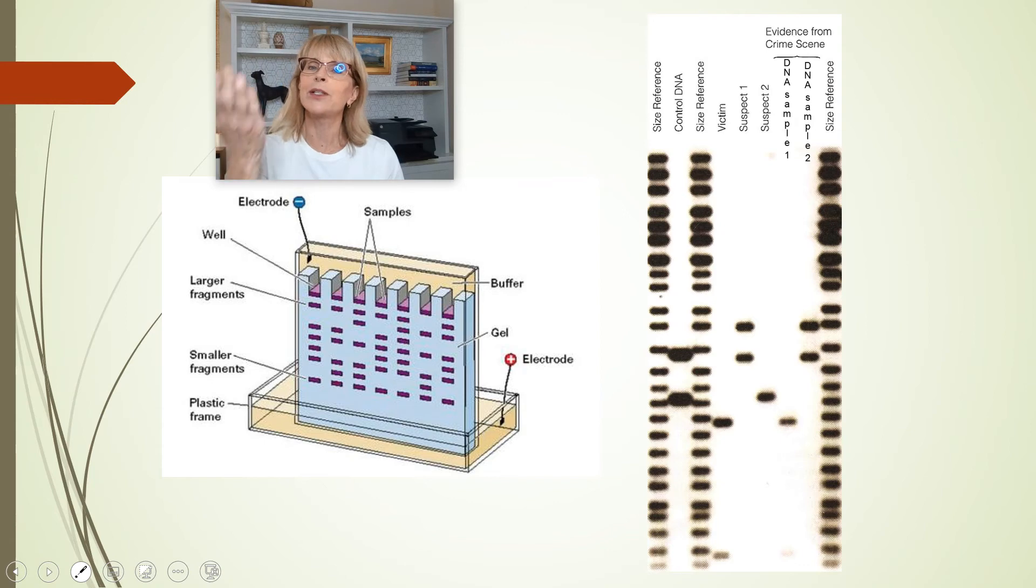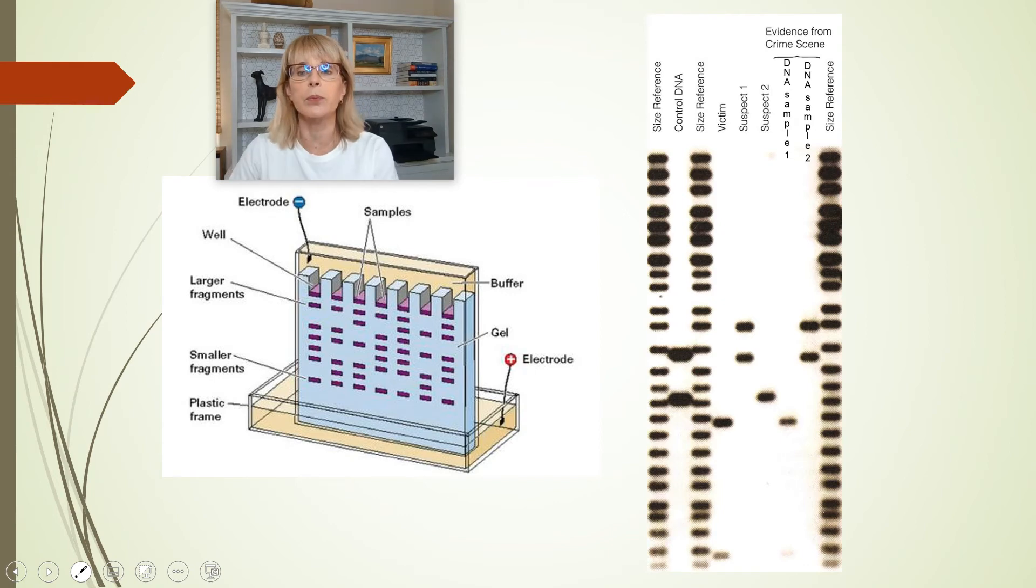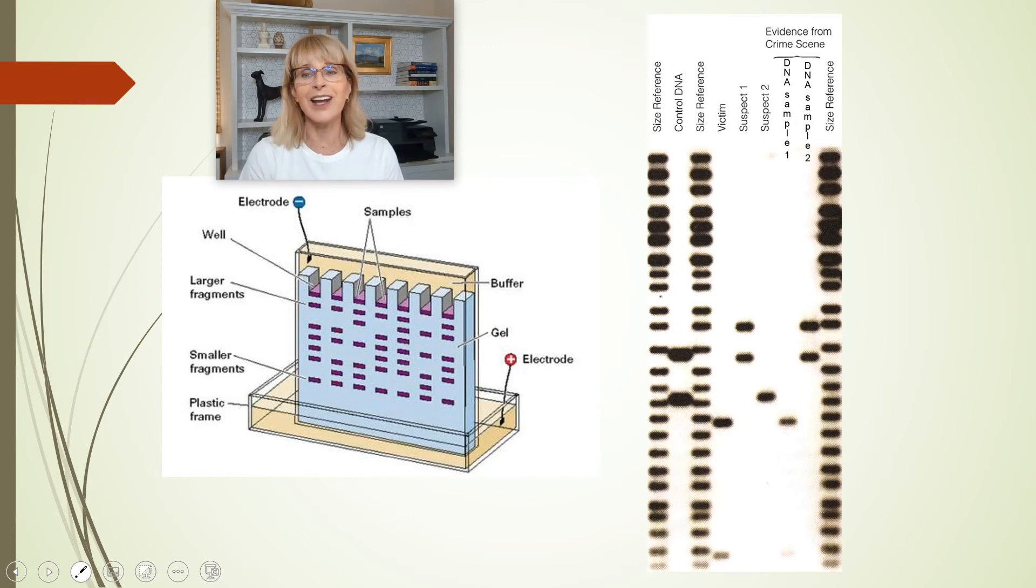Well, now what? Now we would take the victim's DNA and suspect number one's DNA, and we would cut it with a different enzyme, an enzyme that cuts at a different nucleotide sequence. And if this is indeed suspect number one's DNA, then every time I use a different enzyme and it cuts in different places, still victim and the DNA sample one would always be a match on a DNA fingerprint. And with suspect number one and DNA sample number two, if I use different enzymes and I keep cutting the DNA with different enzymes, every time I do it and run the fingerprint, they would always be a match.